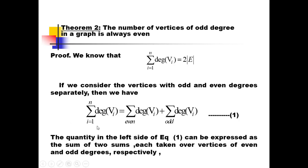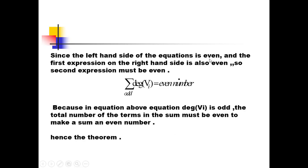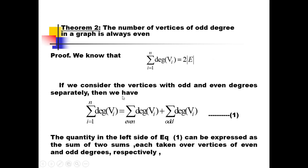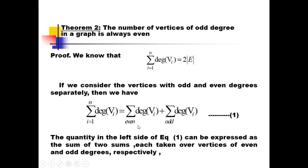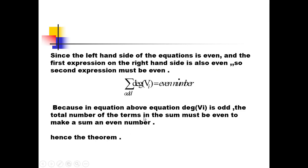Taking the difference between the total (even) and the sum over even-degree vertices (also even), we get an even number, since even minus even is even. So the sum of degrees over odd-degree vertices must also be even. The left-hand side is even, the first expression on the right-hand side is even, therefore the second expression — the sum over odd-degree vertices — must also be even.